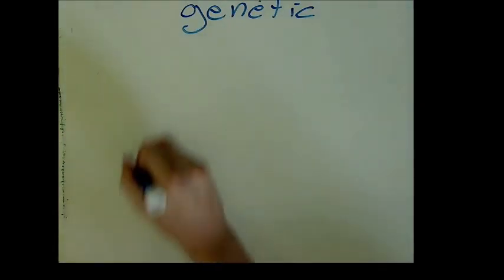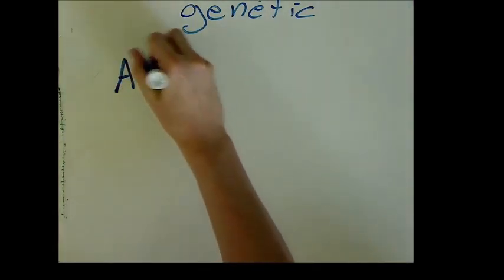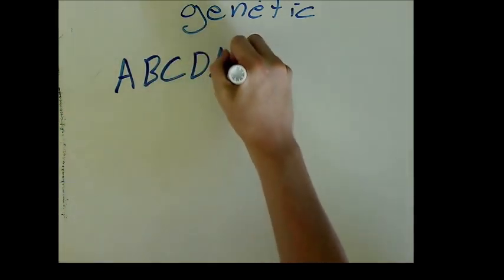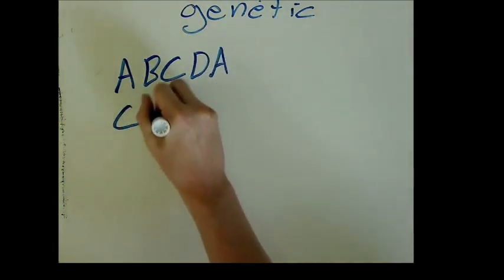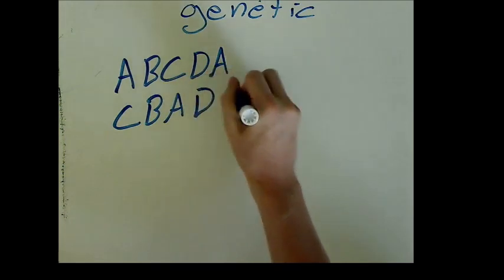Suppose at some step, we have the parent paths A, B, C, D, and back to A, and C, B, A, D, and back to C. The way we create children paths is by conserving the links between cities of both of these parents. So one child, we'll say it starts at city A.